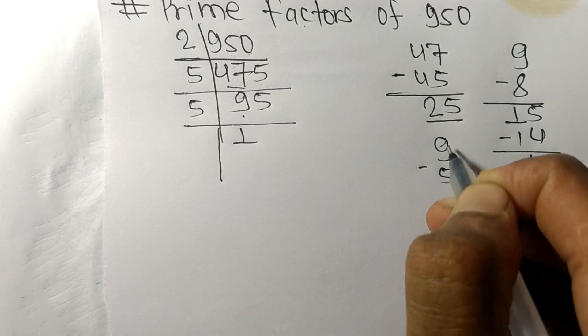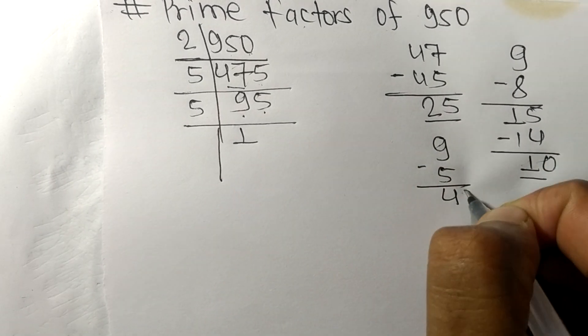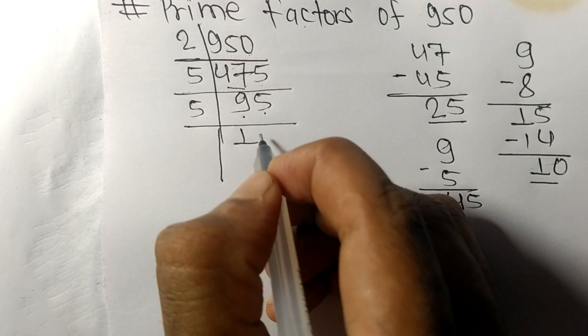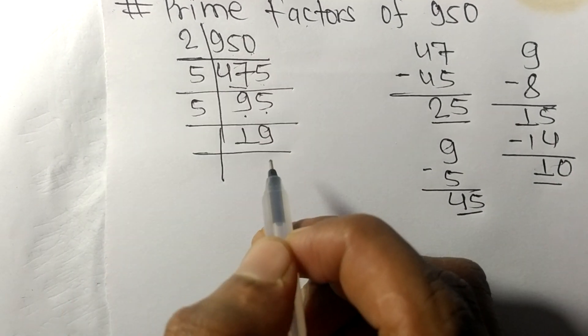On subtracting we get four. And this five, forty five. Five times nine means forty five. So now we got 19, which is a prime number.